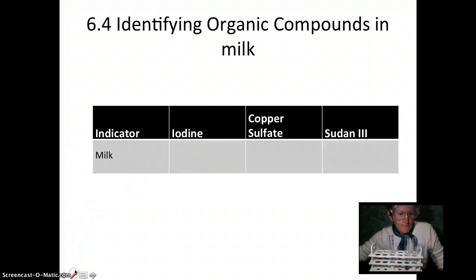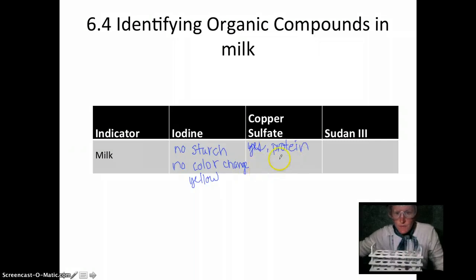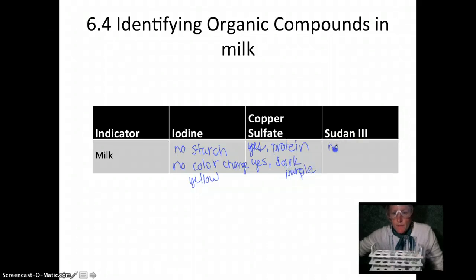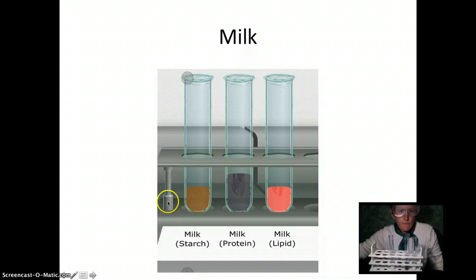So let's fill in our chart here for the milk. In the iodine we didn't really see a color change, so there's no starch. This is going to be evidence for the questions later in the lab. Copper sulfate, we're looking for protein. There was of course protein in milk. Yes, there's protein, yes there was a color change to dark purple. And Sudan 3, no lipids, no color change.